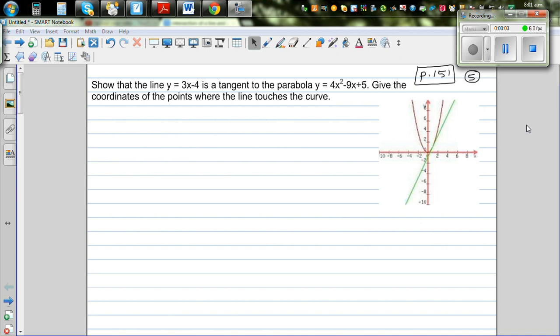This question has been taken from page 151, question number 5. Show that the line y equals 3x minus 4 is a tangent to the parabola y equals 4x squared minus 9x plus 5. Give the coordinates of the points where the line touches the curve.